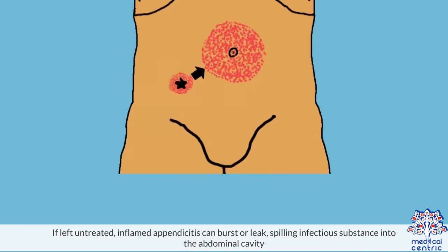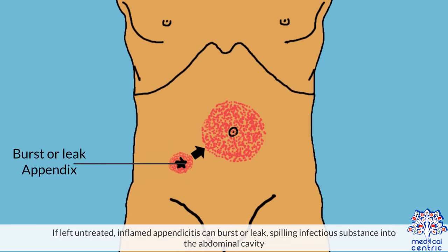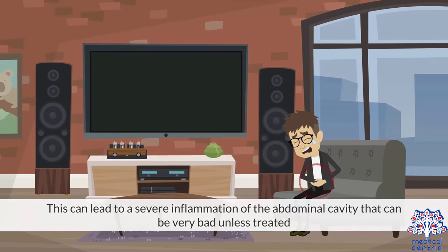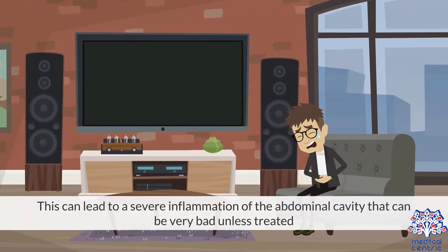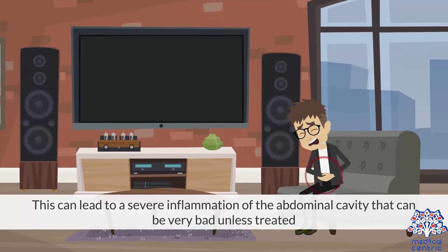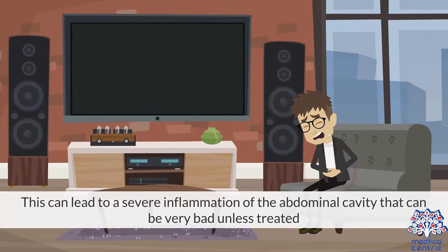If left untreated, an inflamed appendix can burst or leak, spilling infectious substance into the abdominal cavity. This can lead to a severe inflammation of the abdominal cavity that can be very bad unless treated.